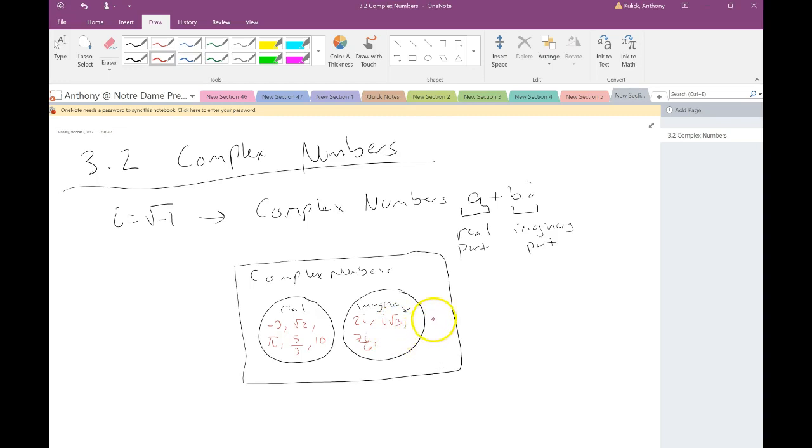The complex numbers, these are going to be things that are of this form. So here's where like i plus 2 might come in, or 3 minus 2i, or 1 plus i square root of 6. Things of that nature.